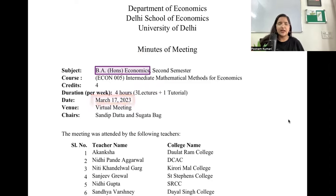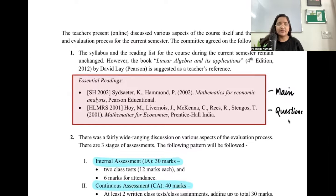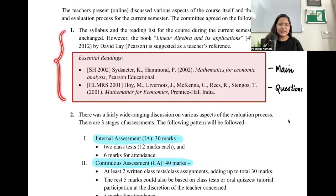17th March ko this meeting was conducted, so it's quite latest, like 3-4 days only have happened. The readings that are relevant for you are Sydsaeter and Hammond, which was your reading for the previous time as well. So that remains your main reading. There is another reading abbreviated as HLMRS based on the names of the authors. This is mathematics for economics, 2001 edition.